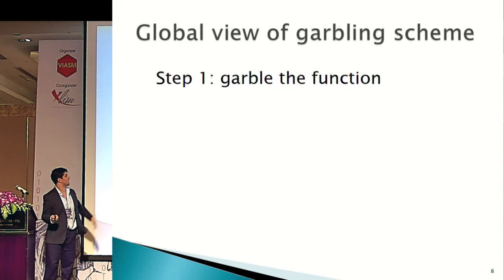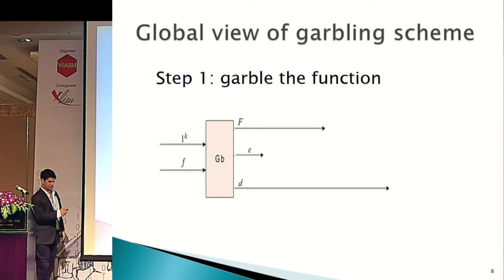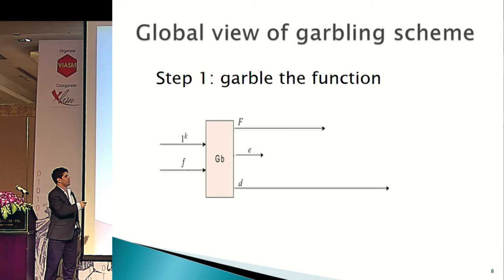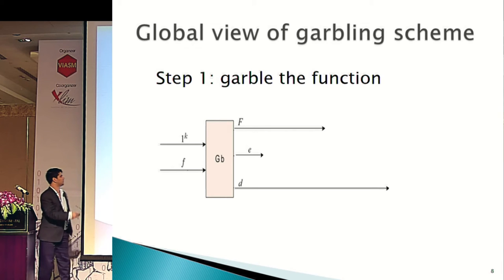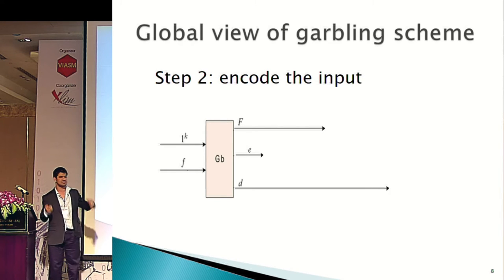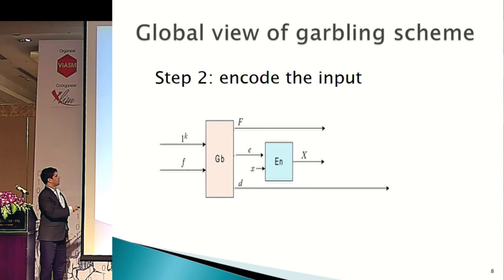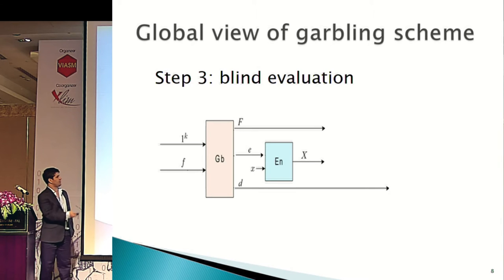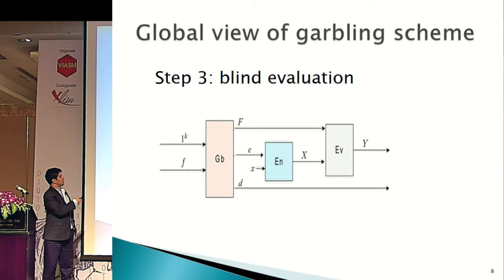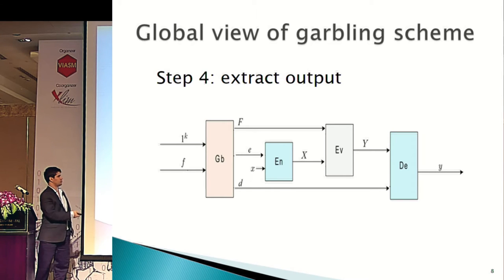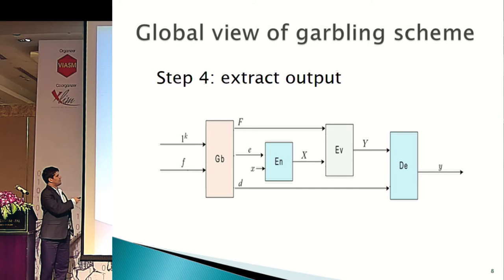The global view of gobbling schemes: this is how a gobbling scheme typically works. First, you gobble the function. This gives you an encoded function, an input encoding string so that you can encode some inputs, and a decoding string which allows you to decode an output. This is the description of function f and the security parameter written in unary. The next step is you encode the input — you take the input encoding string, take an input, and get an encoded output. Then comes blind evaluation, where the second player can take the encoded function and encoded input and produce the encoded output. Finally, you extract the output using the decoding string and the encoded output. This hides the output, the input, and the function.